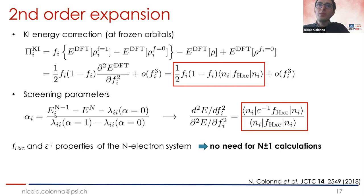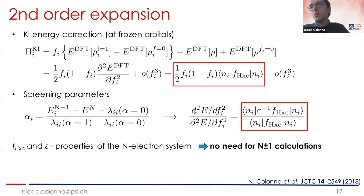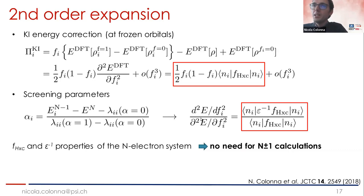We realized that to do this, we had to introduce two simplifications to the general formulation. First, we did a second-order approximation of the KI functional correction in the occupation f_i. This is needed to get rid of any reference to explicit calculations with N±1 electrons. This second-order expansion allows us to completely avoid calculations with different numbers of electrons.